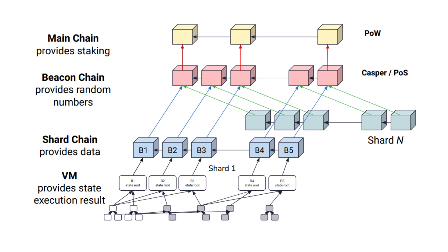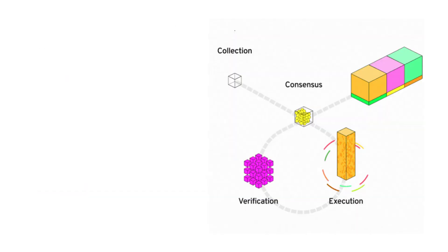Flow doesn't believe in the sharding model of modern blockchains like Polkadot or Ethereum 2.0. Flow argues that this model will degrade the user experience and create problems for developers because of asynchronous execution between shards. That's why Flow created its own architecture to achieve high scalability.